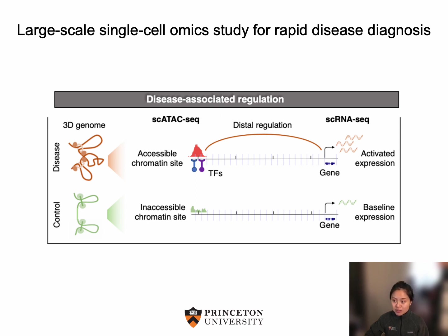However, given the sample heterogeneity, existing integration methods demand laborious manual input and are prone to either over or under correction. Moreover, even if samples are successfully integrated, standard differential analyses are subject to the variable performance of the selected statistical method, yielding many candidate regions and genes of weak predictive power. Without high-resolution 3D chromatin conformation data, inferring the loop between distal chromatin sites and genes was still a major challenge.